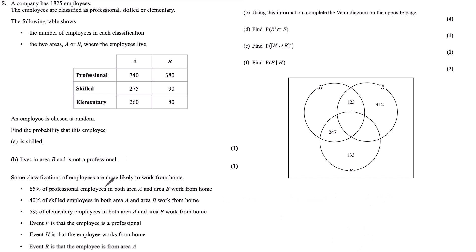Part C. Some classifications of employees are more likely to work from home. 65% of professionals in both areas A and B work from home, 40% of skilled and 5% of elementary. F is that the employee is professional. Event H is that the employee works from home and R is that the employee works from area A. Using this information, complete the Venn diagram.